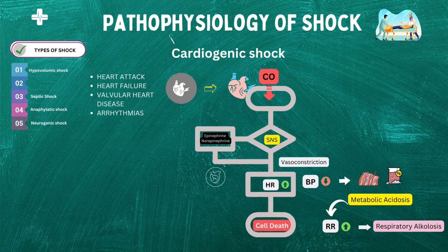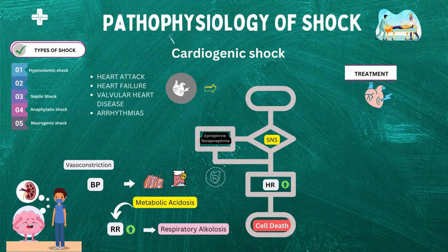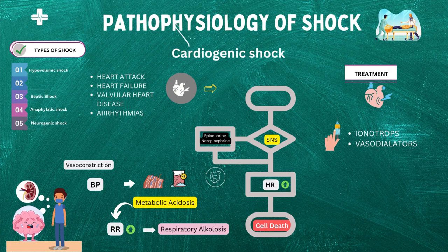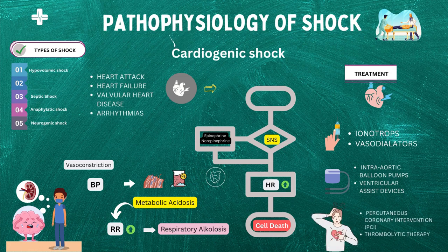This vicious cycle can ultimately result in multi-organ failure, particularly in organs with high oxygen demand such as the brain and kidneys. Treatment for cardiogenic shock involves improving cardiac output and tissue perfusion. This may involve the administration of medications such as inotropes or vasodilators to improve contractility and decrease afterload. In severe cases, mechanical circulatory support devices such as intra-aortic balloon pumps or ventricular assist devices may be necessary. Additionally, treating the underlying cause is crucial — for example, in the case of myocardial infarction, reperfusion therapy such as percutaneous coronary intervention (PCI) or thrombolytic therapy may be necessary to restore blood flow to the heart.